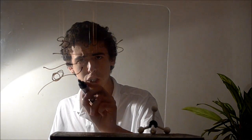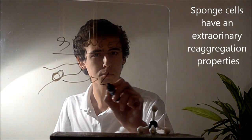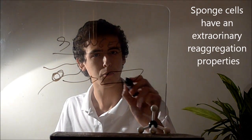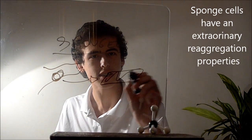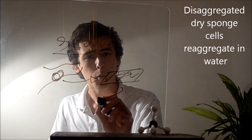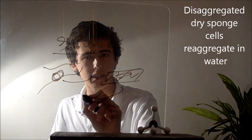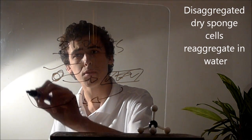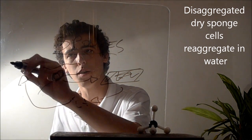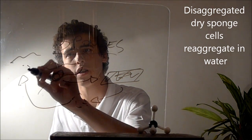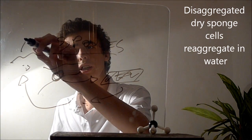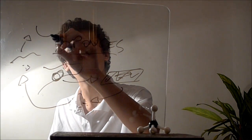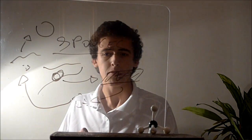So if we've got a sponge and we disaggregate it by passing it through a sieve, for instance, what we will get is the dry cells, but if we put them back in water, what we will get is a brand new sponge.